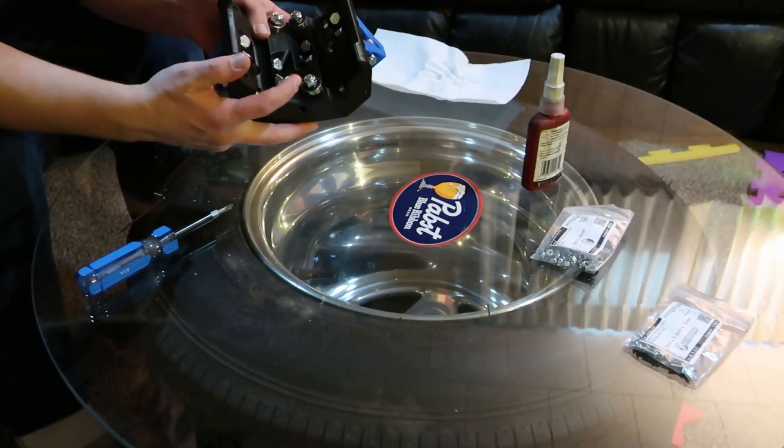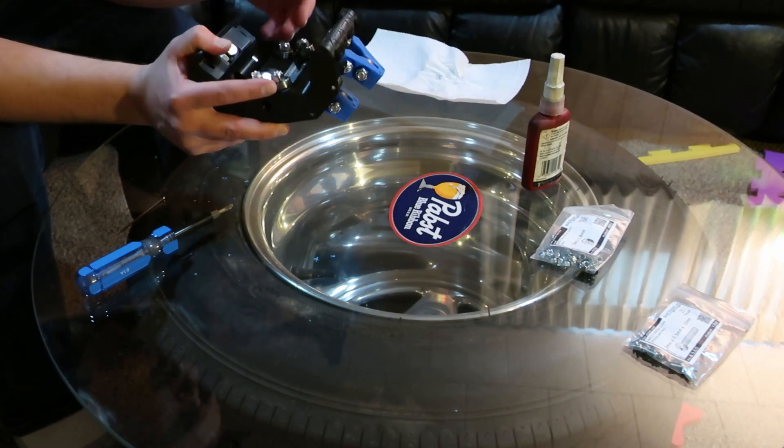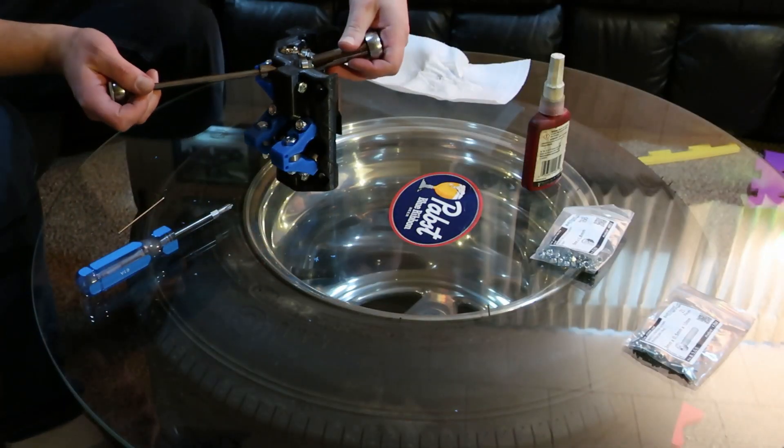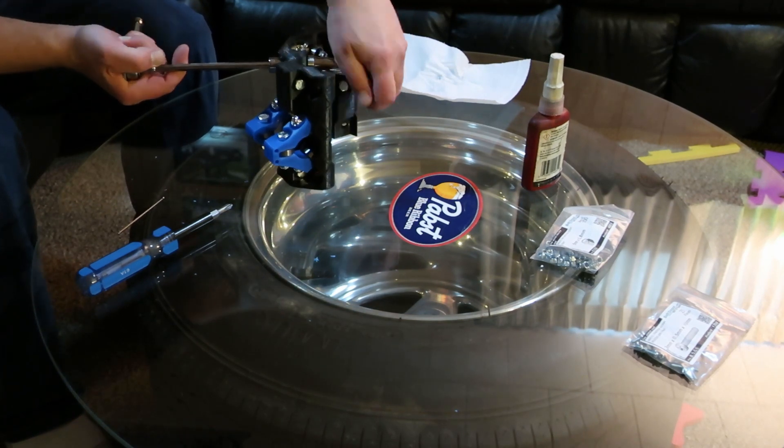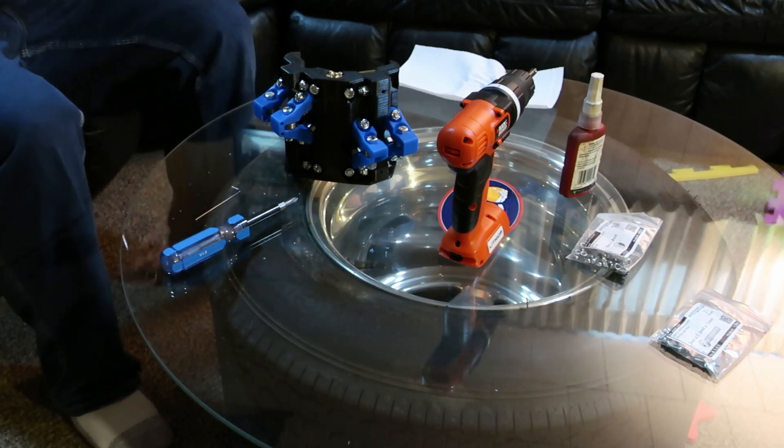Apparently, I put these bolts in backwards. So we'll have to take these center bolts out, flip them around, make clearance for a Z axis. I can't follow a signal like this. I'm going to change this channel's name to watch Eli screw everything up.